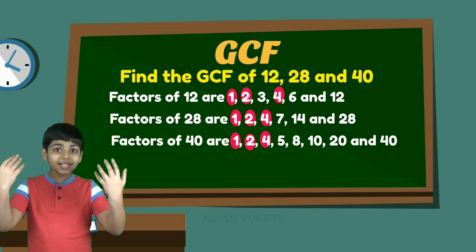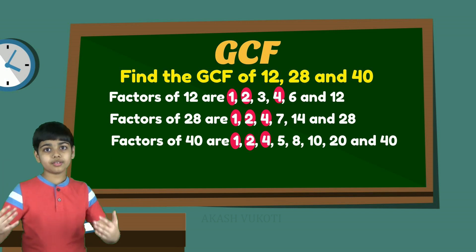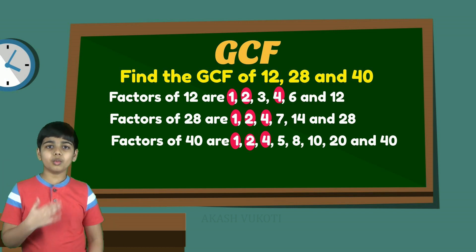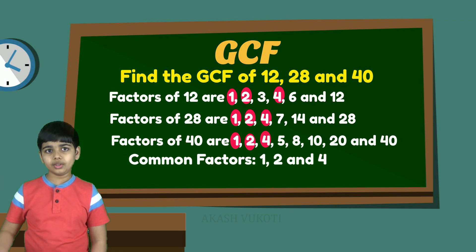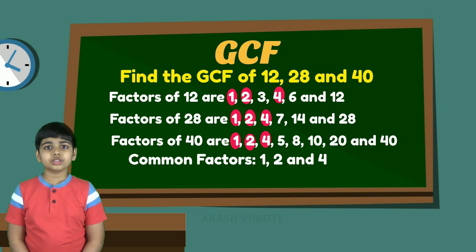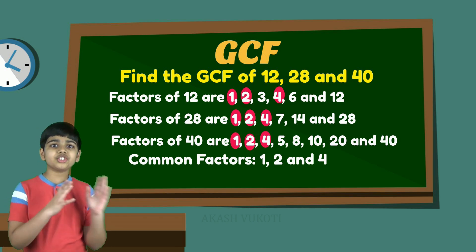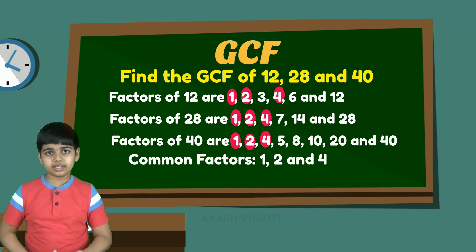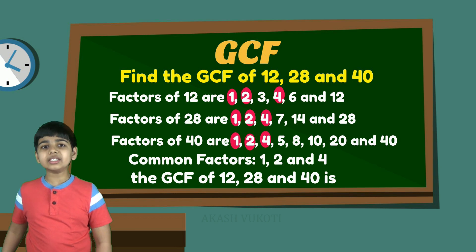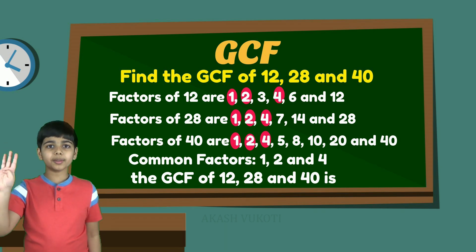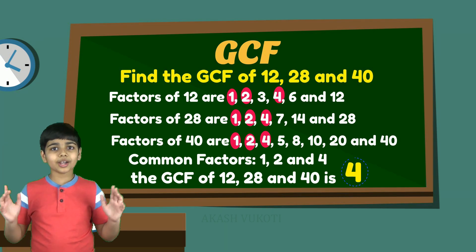So, the greatest common factor — the largest of 1, 2, and 4 — is 4. So, the GCF of 12, 28, and 40 is 4.